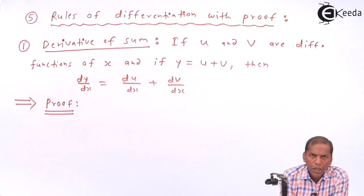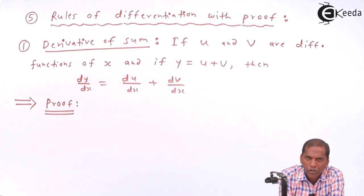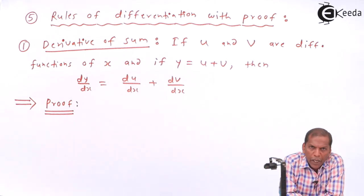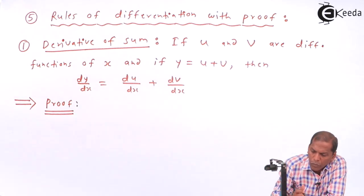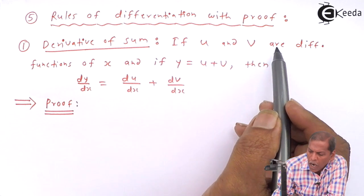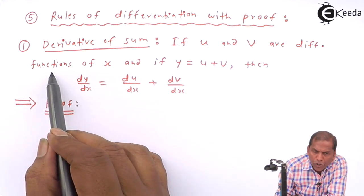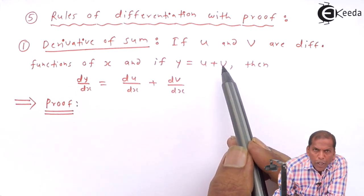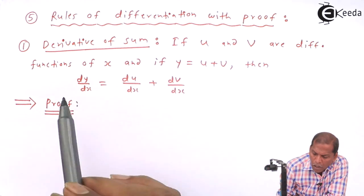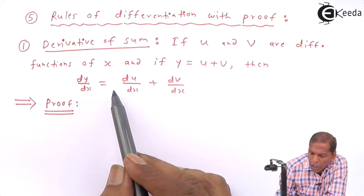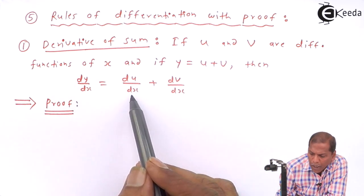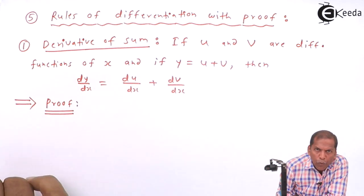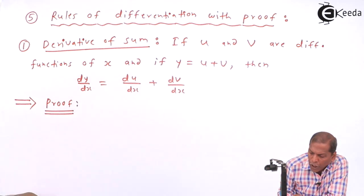Hello friends, now we see the rules of differentiation with proof. Rule number one is derivative of sum: If u and v are differentiable functions of x and if y = u + v, then dy/dx = du/dx + dv/dx. Now let's see the proof. First of all we start